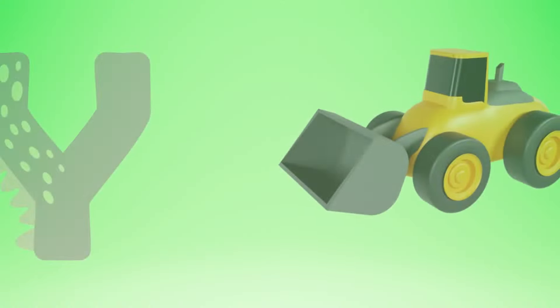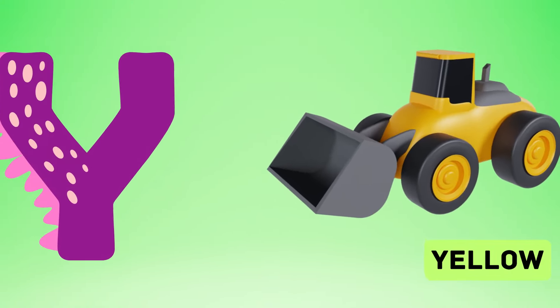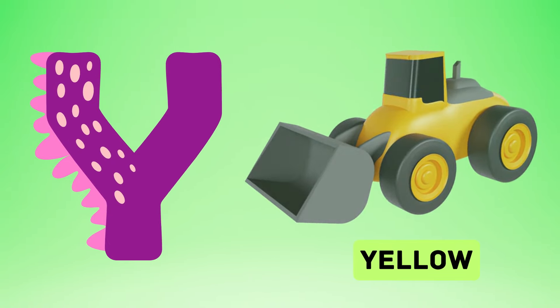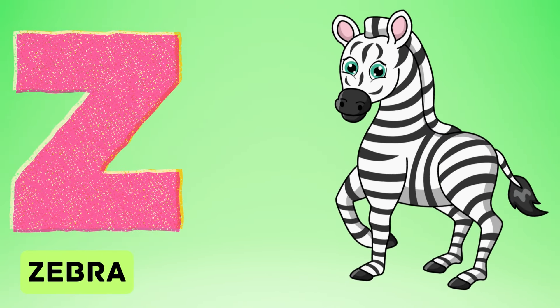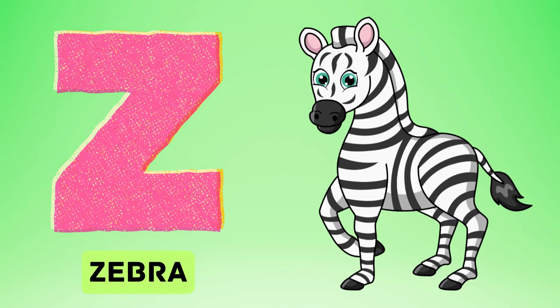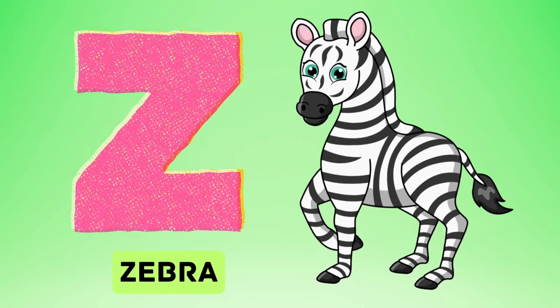Y is for yellow, ye-ye-yellow. Z is for zebra, z-z-zebra.